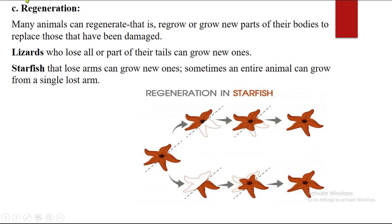Regeneration. Many animals can regenerate — that is, regrow or grow a new part of their bodies to replace those that have been damaged. Regeneration is to regrow the lost body part. For example, in human beings we can also regenerate different tissues which have been damaged, like skin cells or liver cells. But under this topic, regeneration is a form of reproduction common in some animals. For example, if a lizard's tail is lost, it can regrow a new one — that is regeneration.